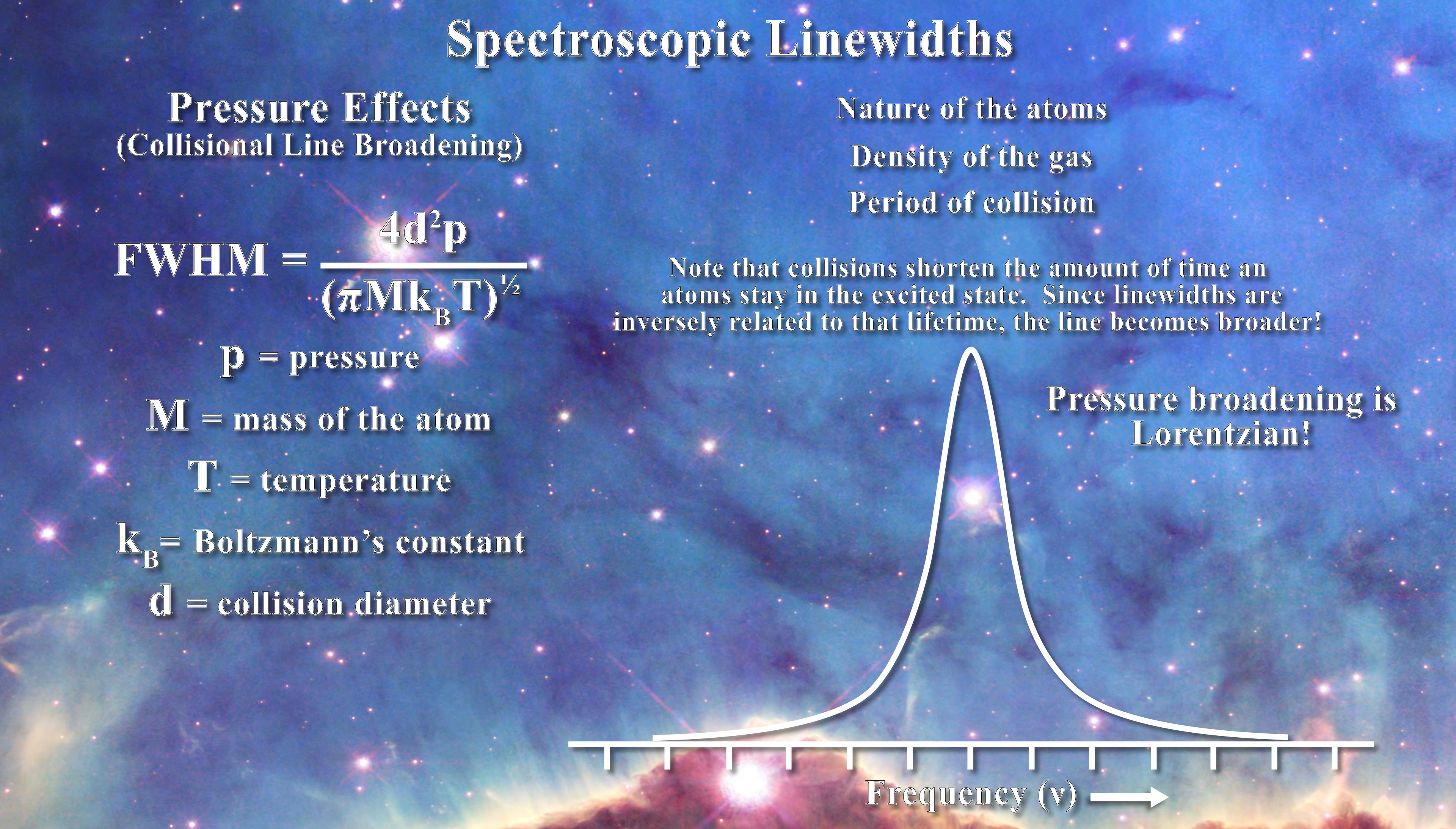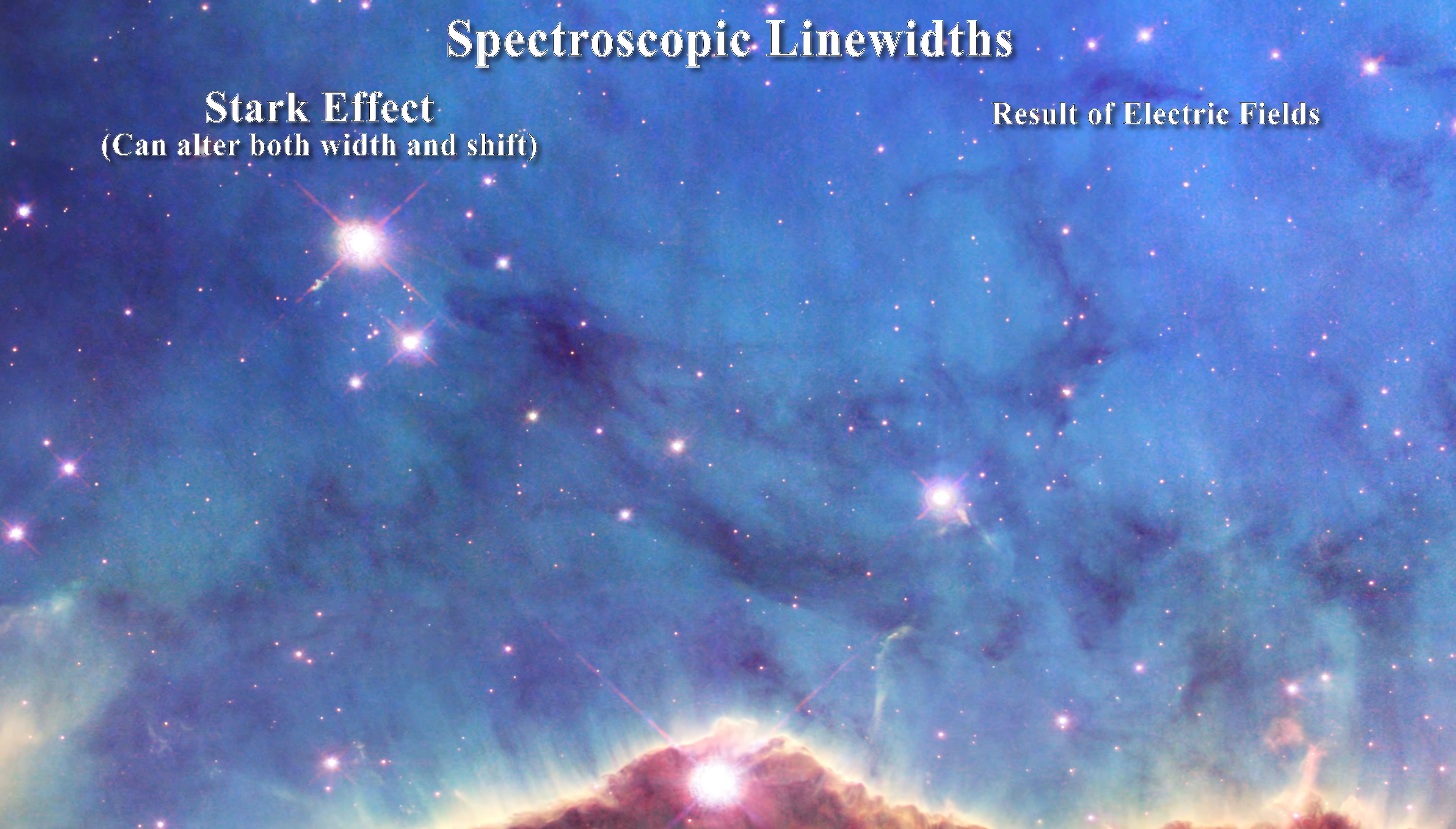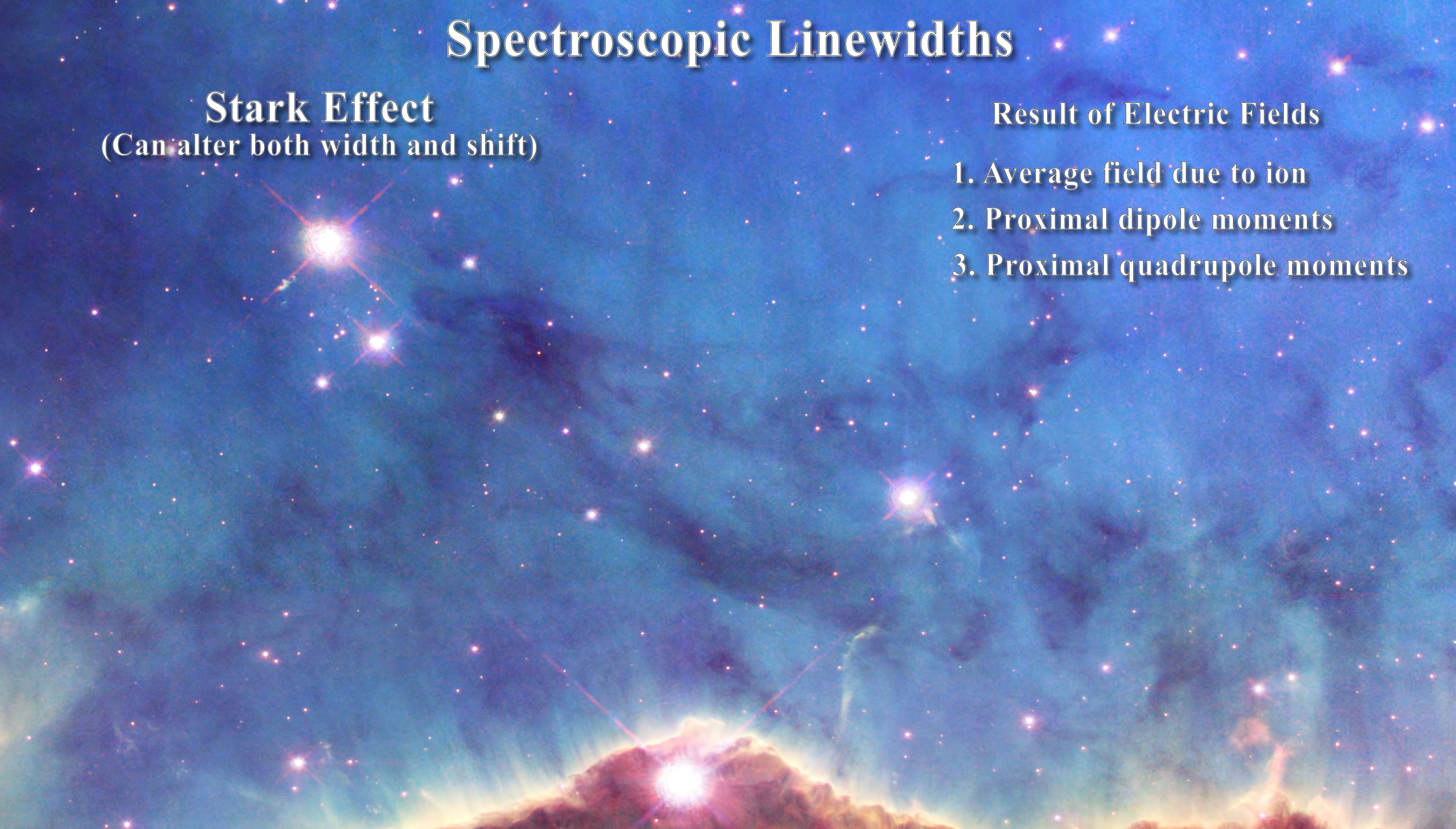The next important consideration for line formation in spectroscopy is called the Stark effect. It can alter both the width and the shift of a spectroscopic line. Stark effects are the result of electric fields around the emitting atom. In the plasma, this electric field can be produced by three separate types of effects. The first is due to the average field due to the ion itself. The second is by a field due to the proximal dipole moments. And the third, by a field due to quadrupole moments. The quantum mechanical effects associated with Stark line broadening and shifts are complex, but we can make progress by noting just a few things of importance to astrophysics.